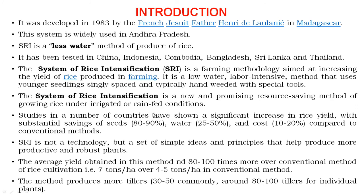That is why the SRI method of rice cultivation is also called resource conservation technology. Studies across a number of countries have shown a significant increase in rice yield with substantial savings: seeds reduced by 80 to 90 percent, irrigation water reduced by 25 to 50 percent, and the cost of cultivation of rice minimized by 20 percent compared to the conventional method.